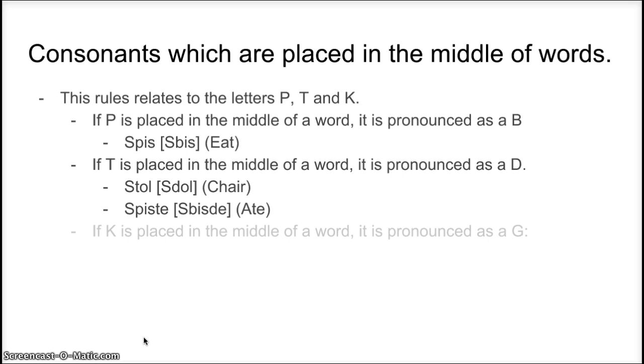Finally, if K is placed in the middle of the word, it is pronounced as a G. Remember that K is pronounced ko and G is pronounced ge.